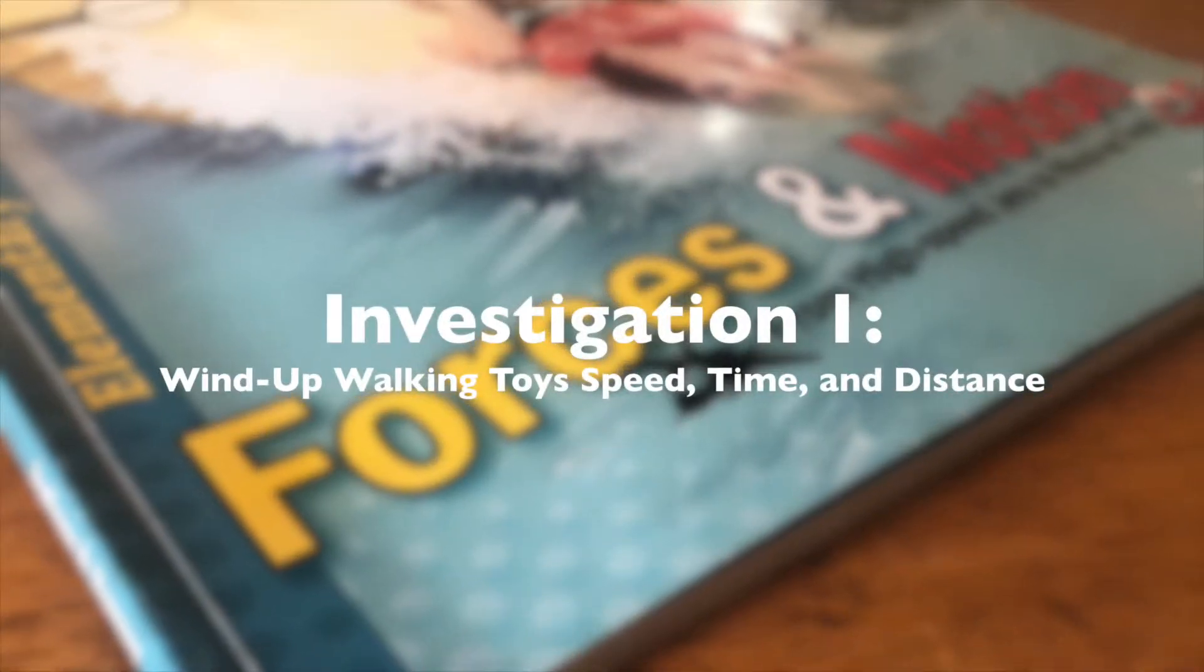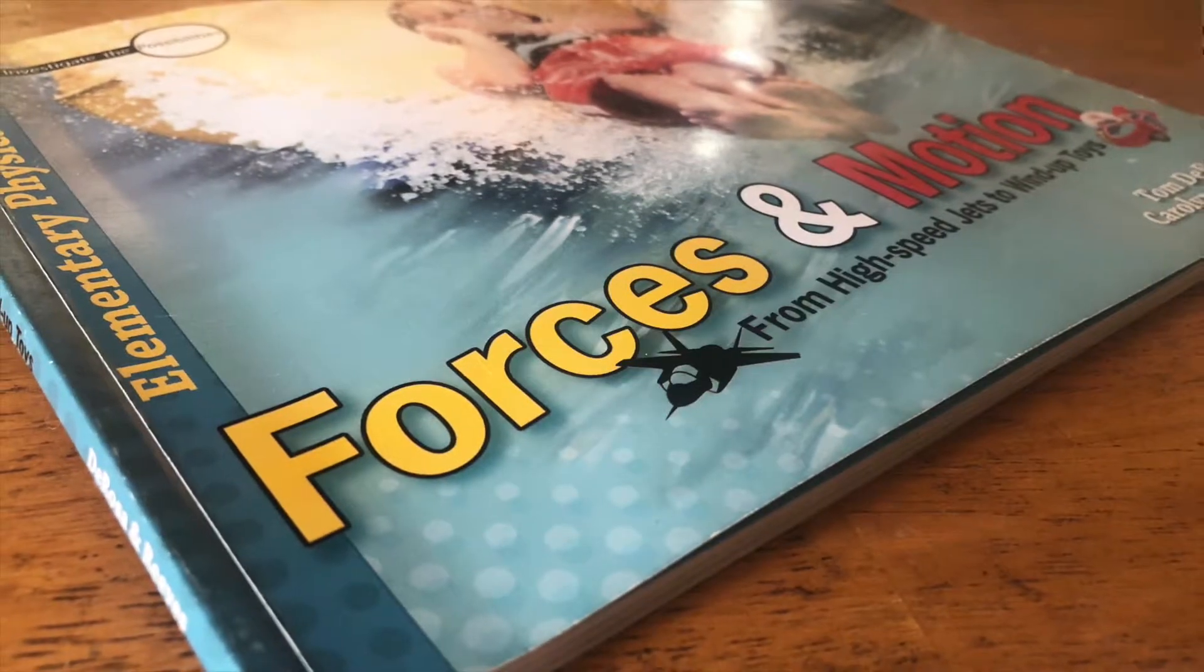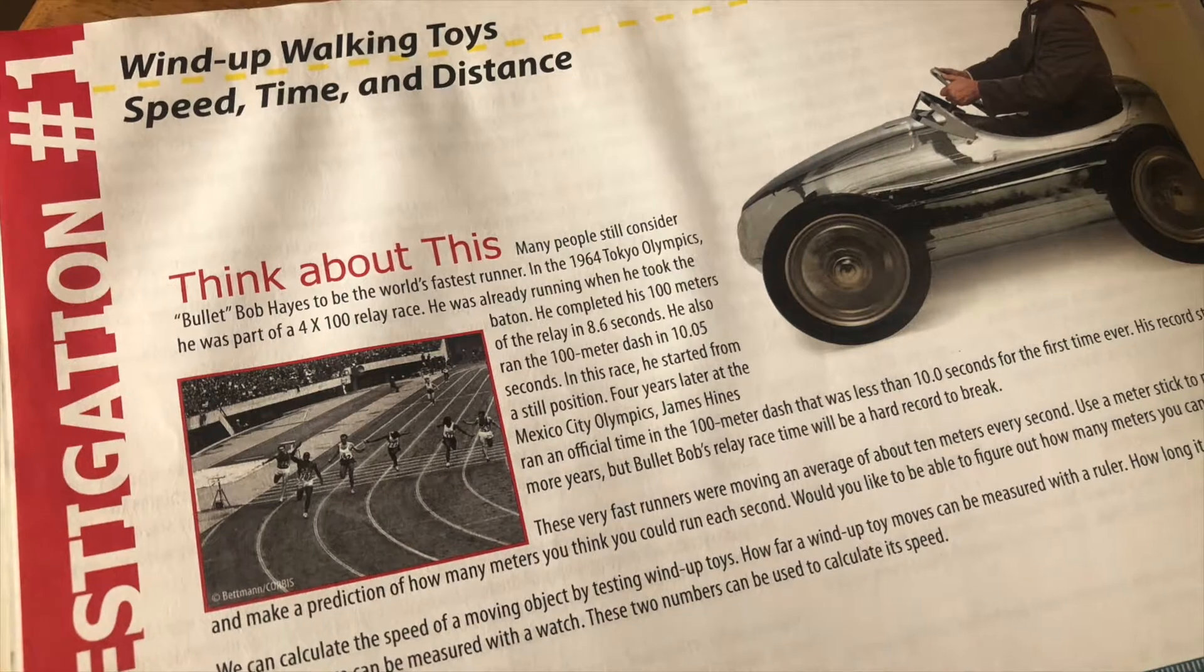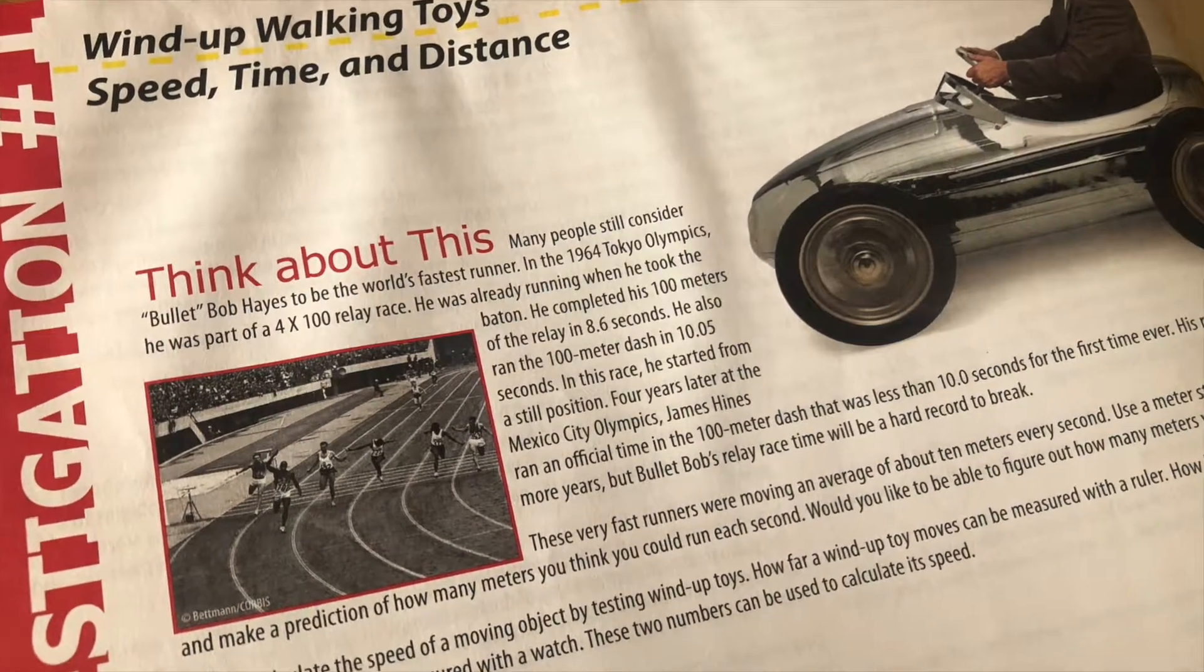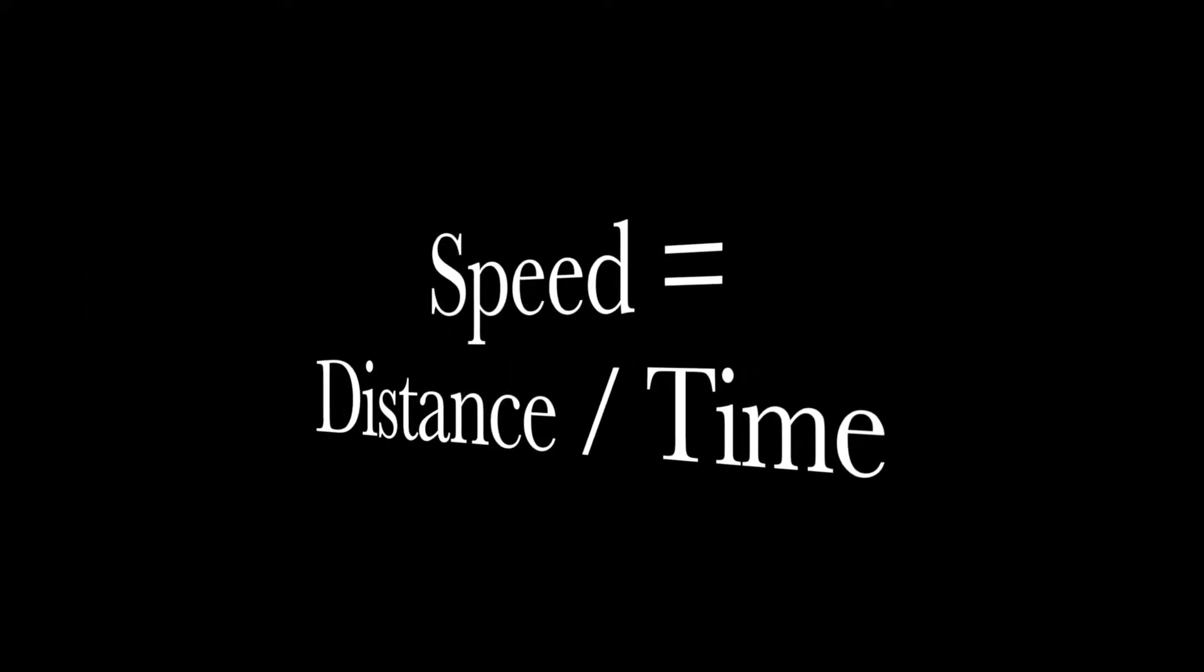Have students read the paragraph about Bullet Bob Hayes and then look at a distance of one meter. Students should try to estimate how many meters they can run in one second and in 10 seconds. They should understand that their speed is found by dividing the distance they run by the time it takes to run it.